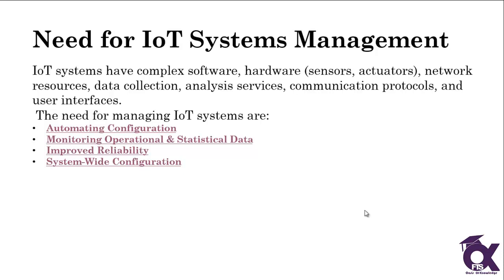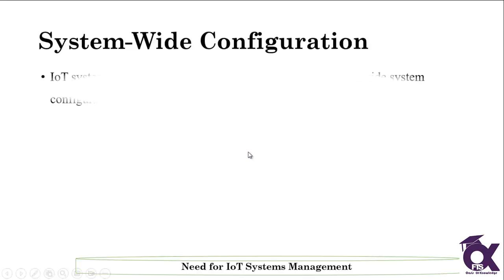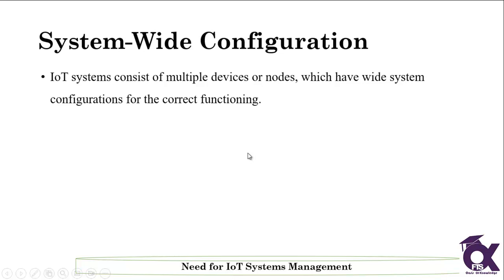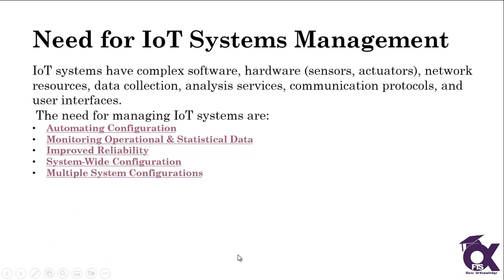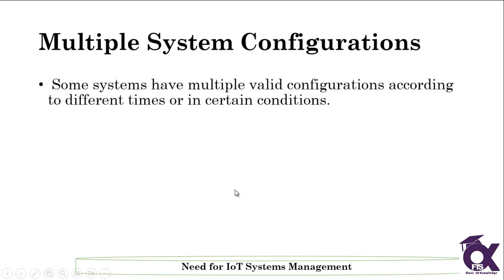The next thing is system-wide configuration. The IoT system consists of multiple devices or nodes which require system configuration for correct functioning. Each device is configured separately, and we have two methods: the first is manual and the other is automated — we can configure our devices either manually or automatically.